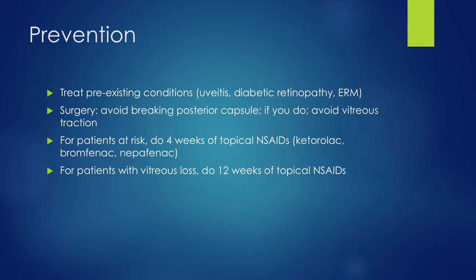The next step in prevention is to treat any preexisting conditions. If they have any uveitis, treat it. If they have any diabetic maculopathy, treat it — if at all possible, prior to the cataract surgery. If they have glaucoma and they're on prostaglandins, maybe you can switch them to something other than the prostaglandin.